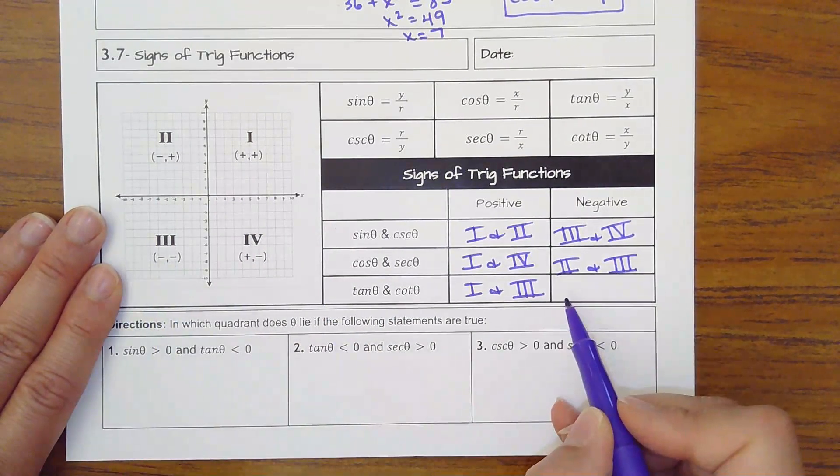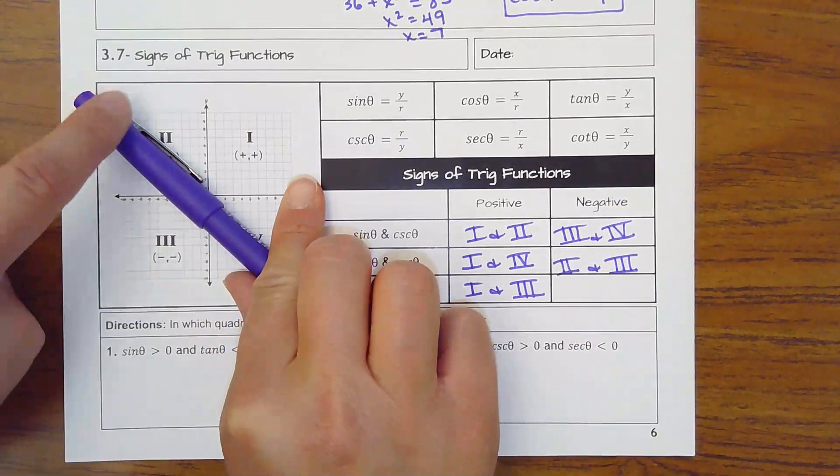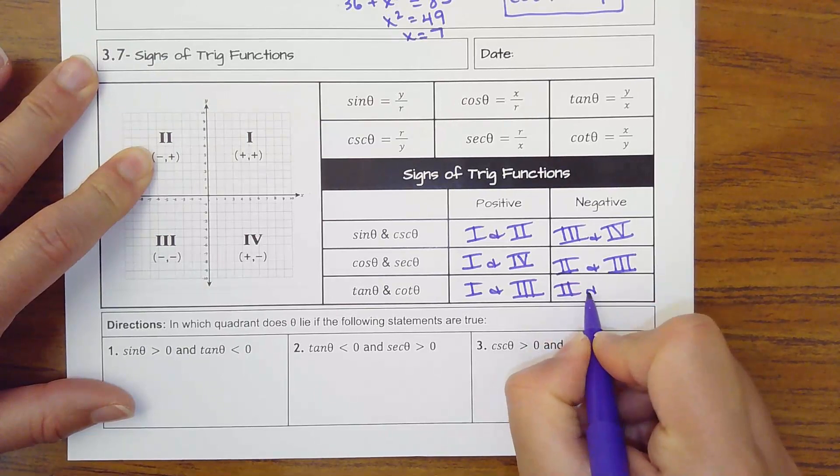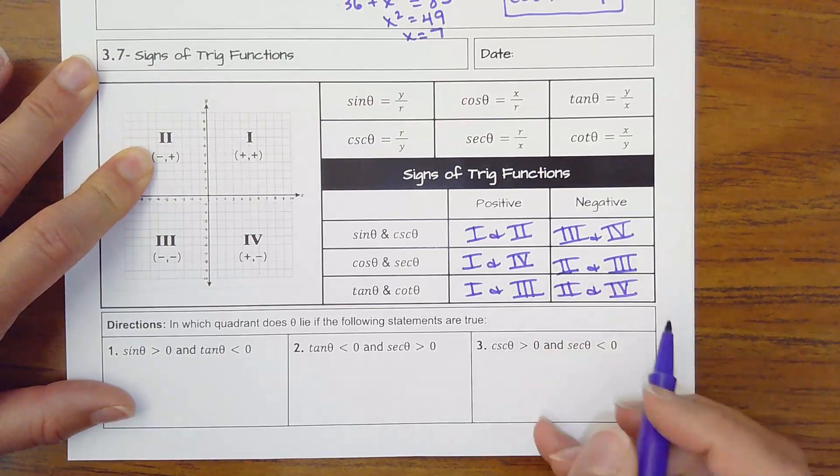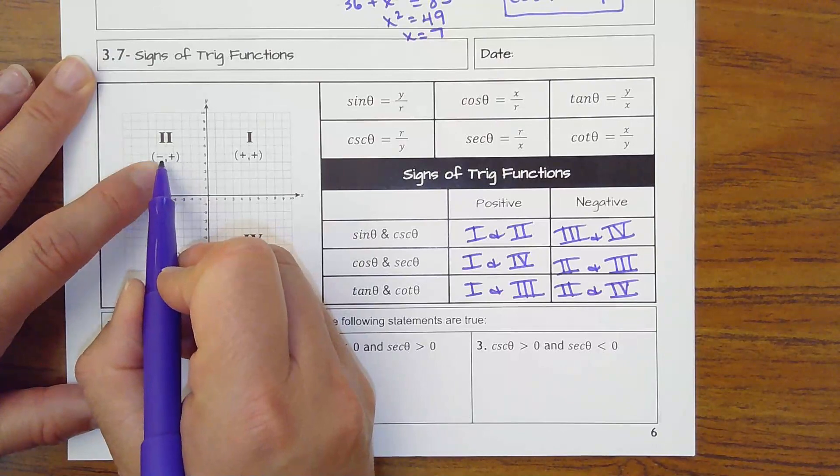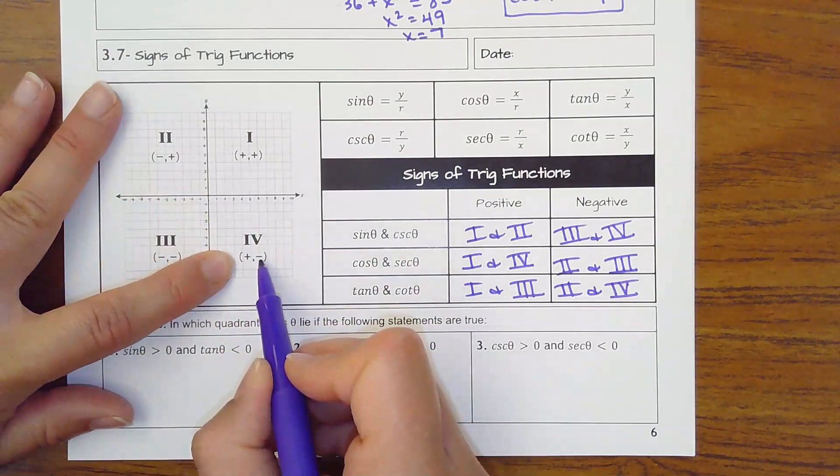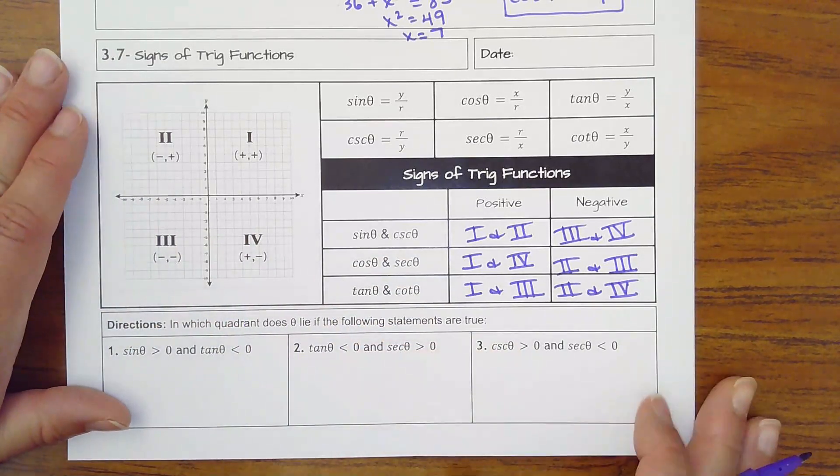So then tangent and cotangent are negative if a line goes downhill like this through quadrant 2 and 4. And because you're taking a positive y divided by a negative x, that would result in a negative tangent. And taking negative divided by positive is negative.